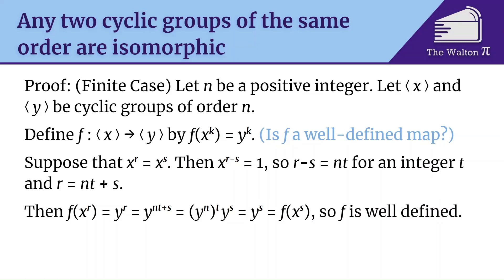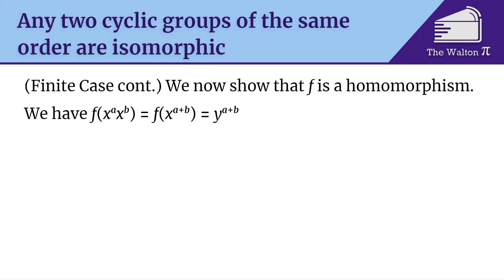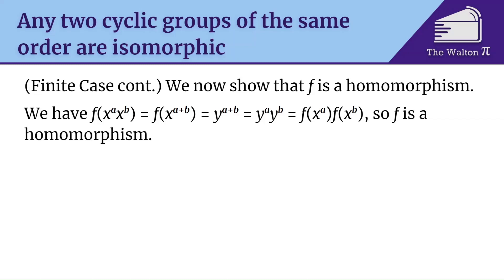All we now need to do is show this is an isomorphism. We start by showing f is a homomorphism, since an isomorphism is a bijective homomorphism. Consider f of x to the a times x to the b. Since x to the a times x to the b equals x to the a plus b, we get f of x to the a plus b, which becomes y to the a plus b. Then y to the a plus b equals y to the a times y to the b, which is f of x to the a times f of x to the b. This is exactly what we needed to show that f is a homomorphism.